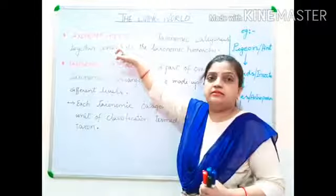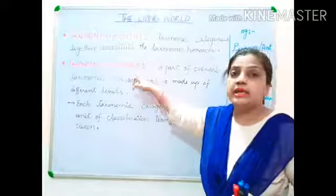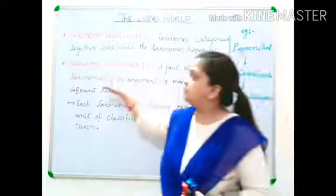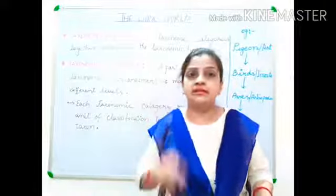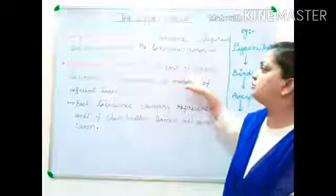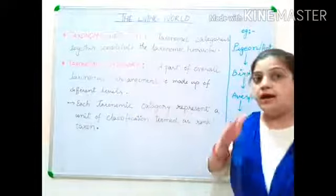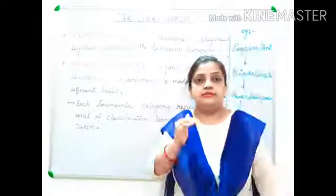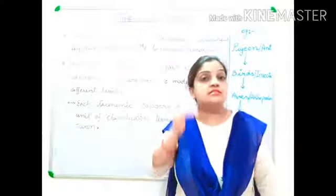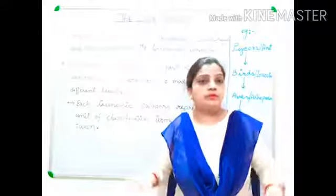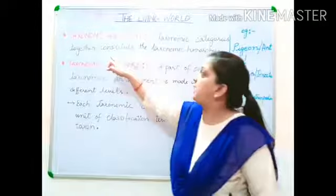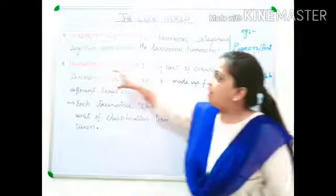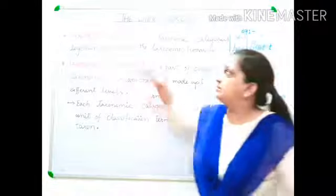Now we shall move to the next topic — taxonomic hierarchy and taxonomic categories. These are also a part of classification itself but more detailed and more explanatory. We will move into the basic points of classification factors in the study of taxonomy. Taxonomic categories together constitute the taxonomic hierarchy, and each taxonomic category will be defining the taxonomic hierarchy.